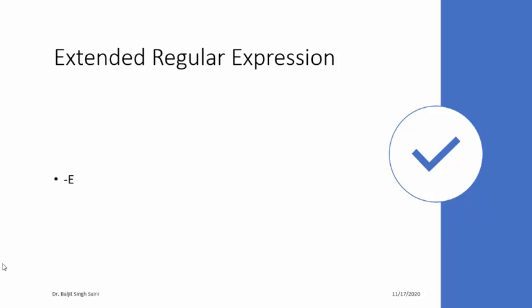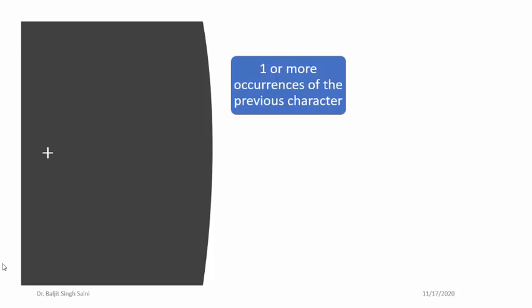There are a few more characters we can use, but they fall under the category of extended regular expressions. Whenever you want to use these characters, you need to use the -E option along with grep. The first such character is plus. Plus means one or more occurrences of the previous character. This sounds similar to star — star meant zero or more occurrences — but plus requires at least one occurrence of the previous character. One thing to notice: I have used -E here.